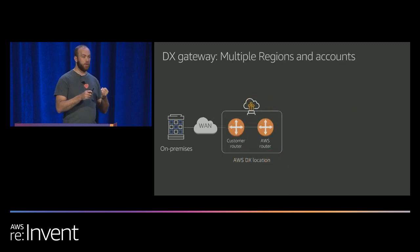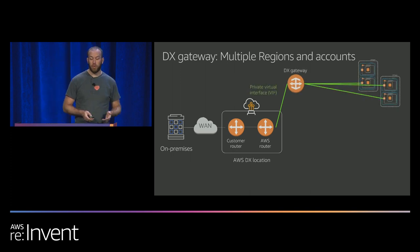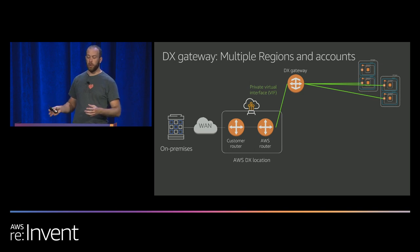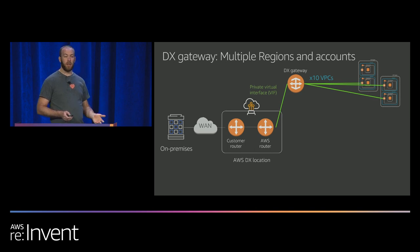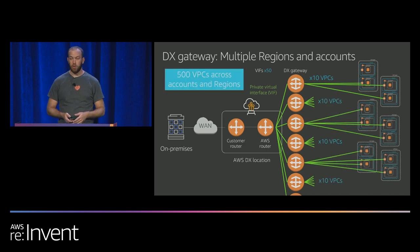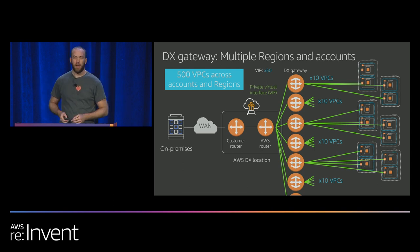What if the VPCs are in different accounts or even different regions? Direct Connect Gateway allows you to connect to different regions and different accounts across the world. You can connect up to 10 different VPCs to a single Direct Connect Gateway. You can create up to 50 private virtual interfaces, so 50 times 10 is 500. As of mid this year, we allow multi-account, multi-region functionality — one physical port essentially gets you about 500 VPCs.